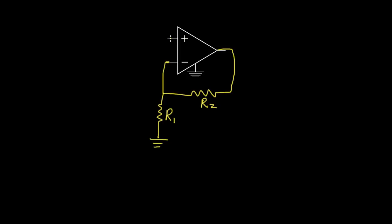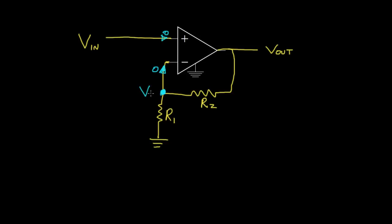I'll connect the input voltage Vin directly to the positive input terminal, and define the output voltage Vout relative to ground. Just as with the previous circuit, I'd like to determine how Vout is related to Vin. Because we have negative feedback, we can use the ideal op amp model. No current flows into the op amp terminals, and the voltage at the positive terminal is Vin, so the negative terminal is also at Vin.